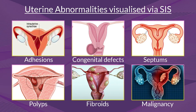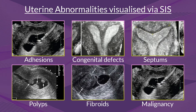Hence, the imaging of the uterus to see what is going on inside is very essential in both women who are having fertility issues as well as women who are having repeated miscarriages. The standard 2D ultrasound is an essential part of the diagnosis; however, there are some abnormalities which are not clearly defined on a standard 2D ultrasound. In these women, saline infusion sonography can help.